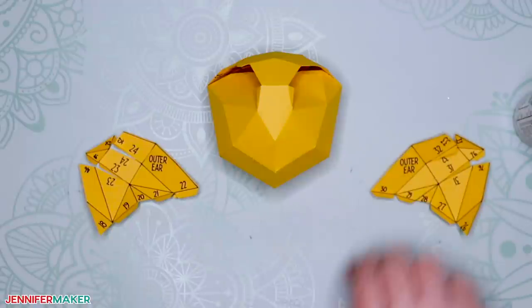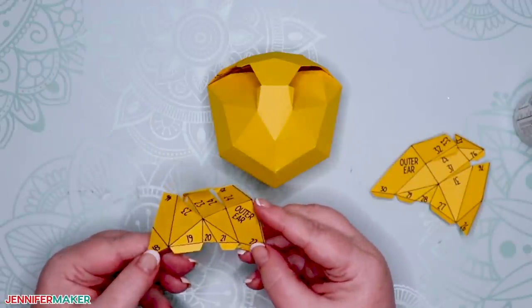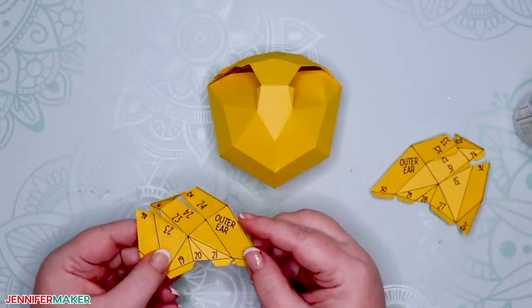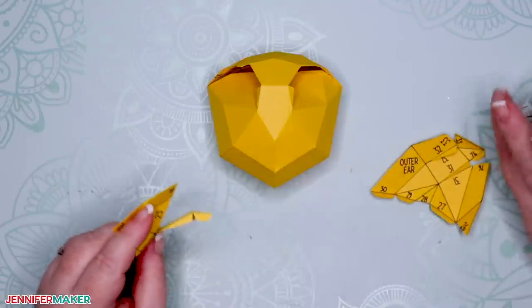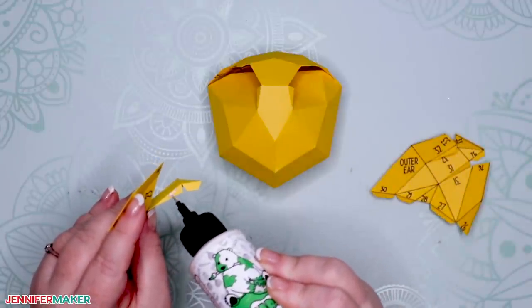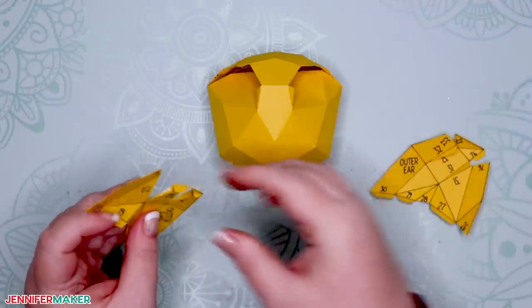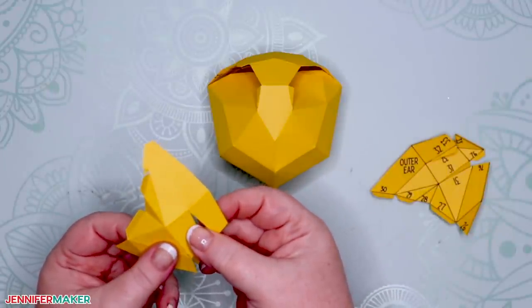Once your 3D cat head is all glued together, it's time to add the other parts to it by matching up the numbers. I recommend you start with the outer ears. Pick up one of the outer ear pieces and begin gluing it in the same way you did with the head, matching up numbers. Like before, I recommend gluing from the good side so you can make sure your edges meet and you can watch for any glue issues.